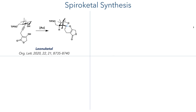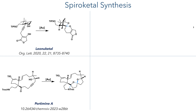We've encountered the problem of spirochetal synthesis several times before on this channel, such as in Leo Nucatel, where the authors used a gold-promoted cyclisation of an alkyne to form the 6,6-spirochetal system. Similarly, the Baran synthesis of portamines A and B also used a gold-promoted reaction of an alkyne, in this case forming 3,5-membered rings containing the spirochetal motif.